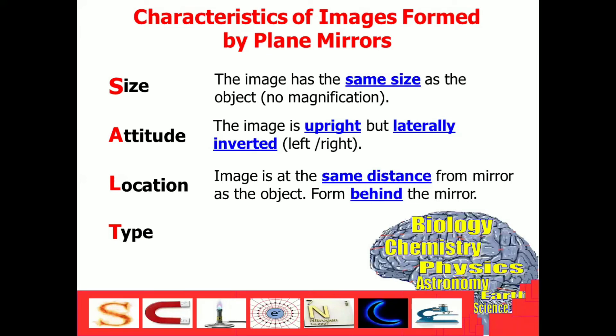That is the reason why the type of the image that we form is virtual image. Once the image is formed behind the mirror, it is forming virtual images. And again, virtual images cannot be projected on a screen.